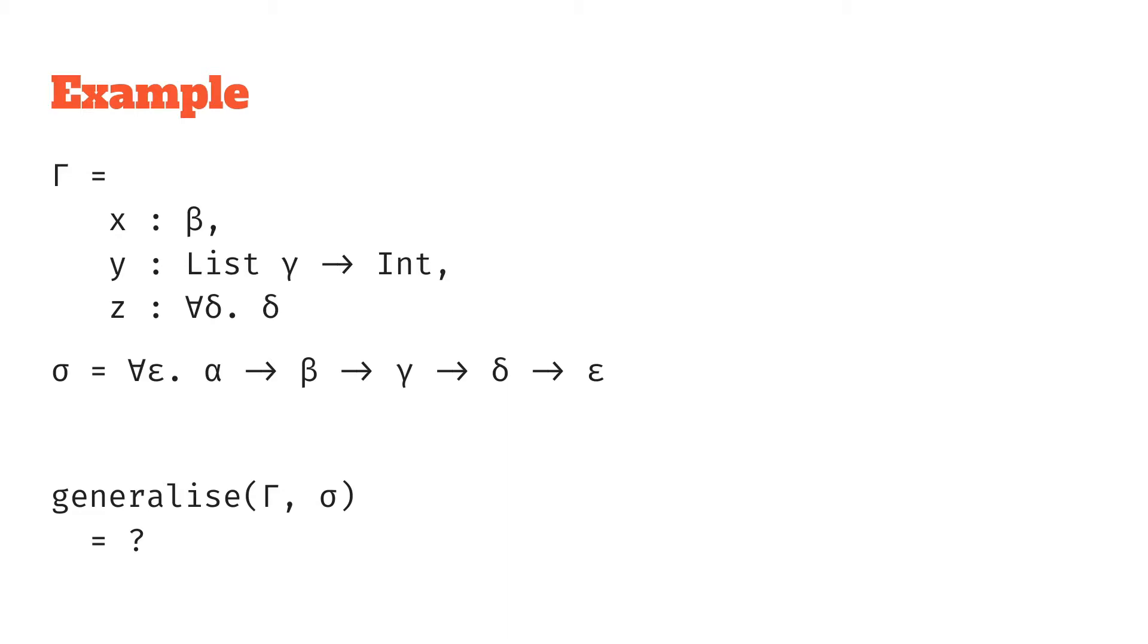Remember the generalized function takes our type and adds additional for all quantified variables to it. So in this case we're going to have that type and add new things. The real question is what are these additional for all quantifiers that we're going to add? Those are going to be the free variables in the type that aren't free in the context. So let's figure out what are the free variables in the type and the free variables in the context.